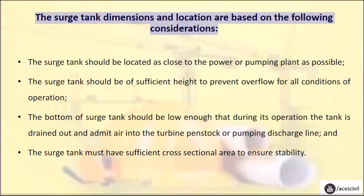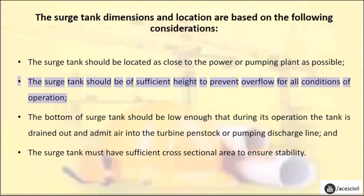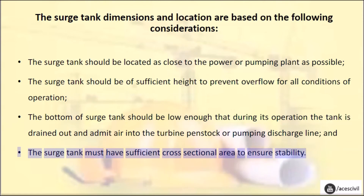The surge tank dimensions and location are based on the following considerations. The surge tank should be located as close to the power or pumping plant as possible. The surge tank should be of sufficient height to prevent overflow for all conditions of operation. The bottom of the surge tank should be low enough that during its operation the tank is not drained out and does not admit air into the turbine penstock or pumping discharge line. The surge tank must have sufficient cross-sectional area to ensure stability.